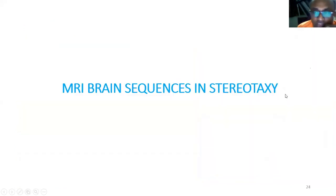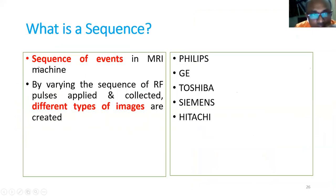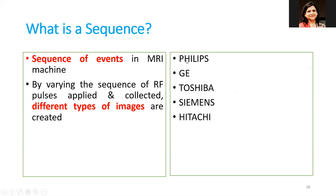MRI brain sequences in stereotaxy are divided into structural sequences, functional sequences, and tractography. Structural sequences show anatomical properties; tractography shows nerve tracts; functional sequences show brain activity. Sequence is the sequence of events in the MRI machine. By varying the sequence of radiofrequency pulses applied, different types of images are created. Different companies like Philips, GE, Toshiba, Siemens, and Hitachi use different names, but T1, T2, and FLAIR are the most universally recognized.